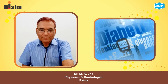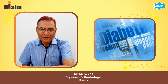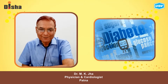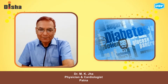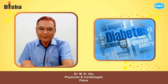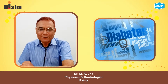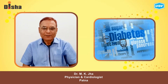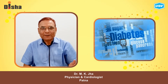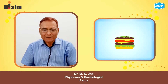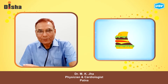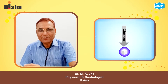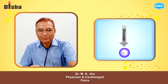I am going to tell you about diabetes. What is diabetes? Diabetes is a metabolic disorder that occurs when your blood glucose level is too high. It is due to an absolute or relative deficiency of insulin in your body.